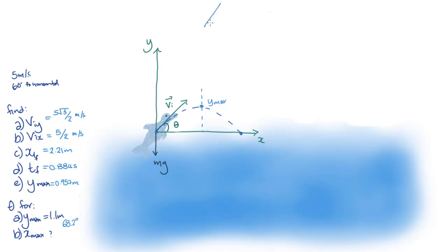xmax, the range, is just vix times t, the time of flight. Vix can be replaced with vi times cos theta, but what about t? Well, the time of flight can be found by setting the height y equals 0, and then solving for t.